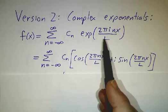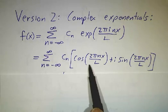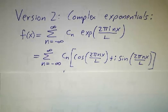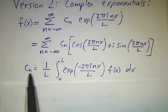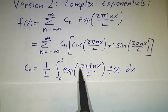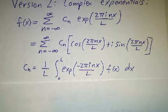If you prefer, you can split this up as a cos plus i sine piece, and you see the same functions, cosine and sine, that we did in version 1. And what are our cn's? It's just the integrals of e^(-2πinx/L) times f dx, divided by L.